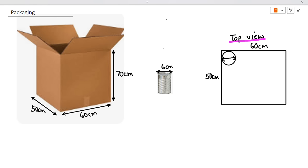So we're going to look at the length of the box, and the length is 60 centimeters if we're looking at the diagram on the right hand side. The length of the box divided by the diameter of the tin will tell you how many tins will fit along the length of the box.